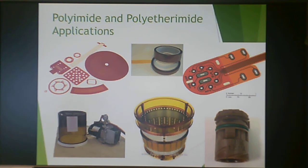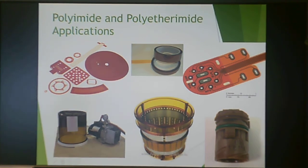Here are some polyetherimide and polyimide applications: a pump housing, a filter housing, circuit boards, tape, and similar components. You can see on all of these that characteristic deep red-orange color because of the aromatic rings and the structure within them. And thus concludes polyetherimide. Moving on to polyether ether ketone.